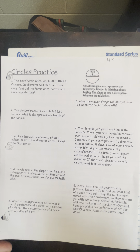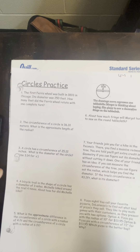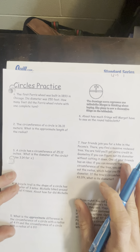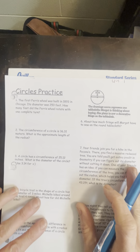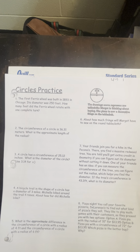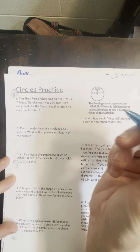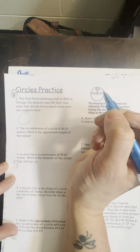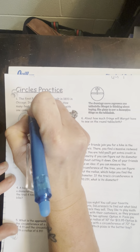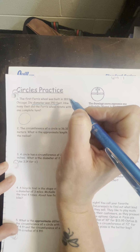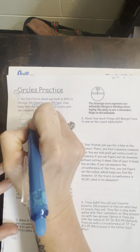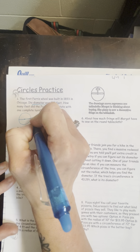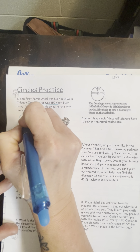The first Ferris wheel was built in 1893 and its diameter was 250 feet. When I'm doing these word problems with circles, the first thing I do is draw my circle with a diameter. The diameter goes all the way across, so my diameter is 250 feet.